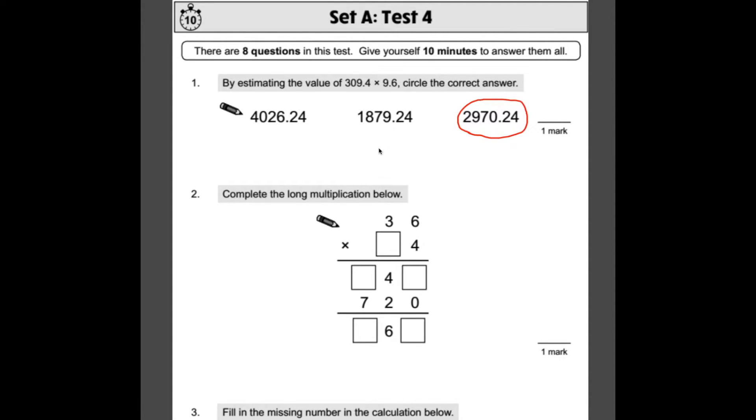We can eliminate the other two because 4,000 is obviously too big. It's only 9 more than 300, and this is less than 10. So even if it was 309 multiplied by 10, you'd still be over 1,000 away from this answer. And this one's obviously too small. So that is your best one.